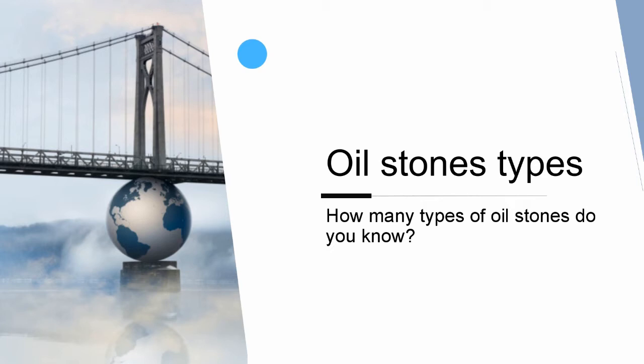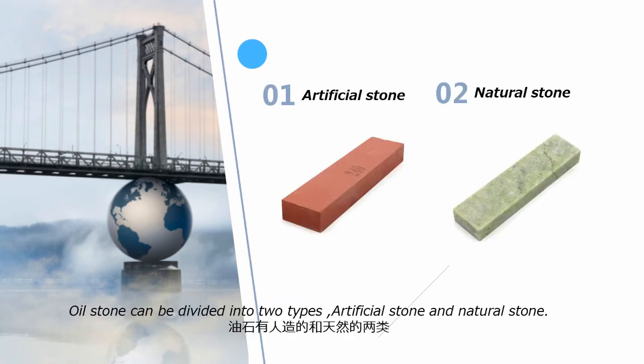How many types of oilstones do you know? Oilstone can be divided into two types: artificial stone and natural stone.